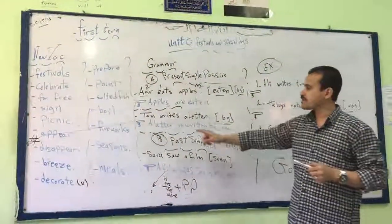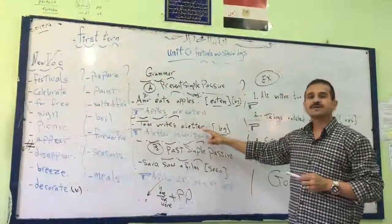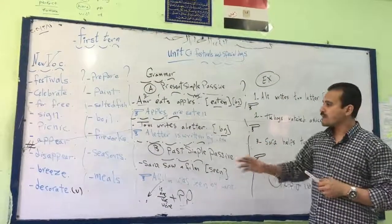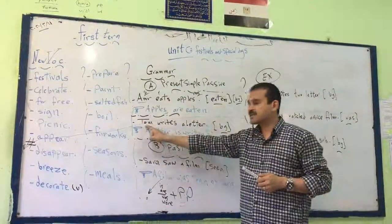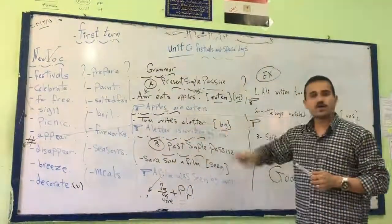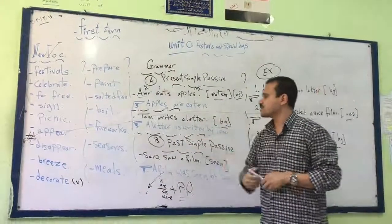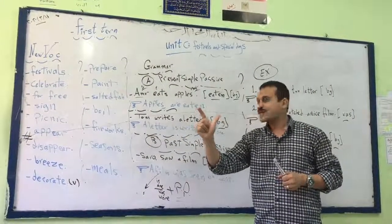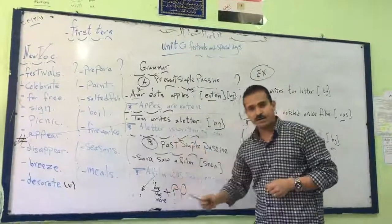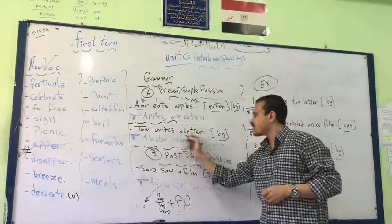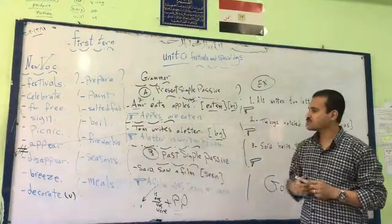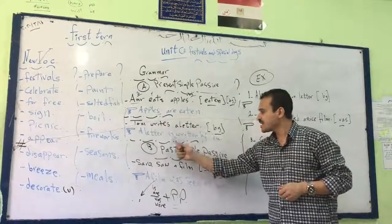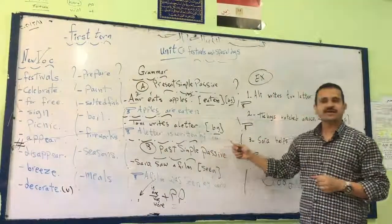Another example, number two: Tom writes a letter. Use by. Now again, this is the subject, the verb, the object. Begin with the object: a letter. What's number two? Yes, we use is or are. But here, a letter is singular, so we use is. Number three is the past participle of the verb, so it will be is written by Tom.